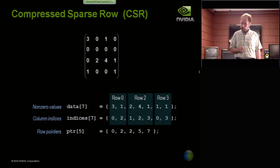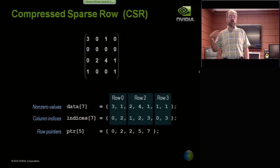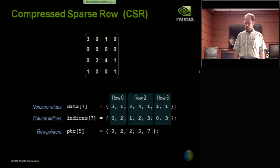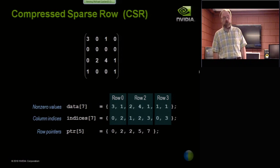So those are just index offsets. Row 0 starts at entry 0, row 2 starts at entry 2, row 3 starts at entry 5. And I record a 7 at the end so I can maintain the invariant that the length of row i is just the difference between pointer i and pointer i plus 1. So that last entry is just the number of non-zeros.